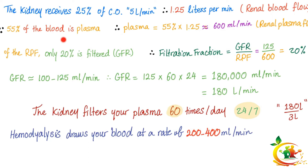55% of the blood is plasma and the other 45% is red blood cells — that's why hematocrit is normally around 45%. So the plasma volume is 55% times the blood volume, which equals around 600 mls per minute — we call this the renal plasma flow. Of the renal plasma flow, only 20% is filtered, which is called the GFR. The filtration fraction, which is GFR over renal plasma flow, is 125 over 600, or around 20%.